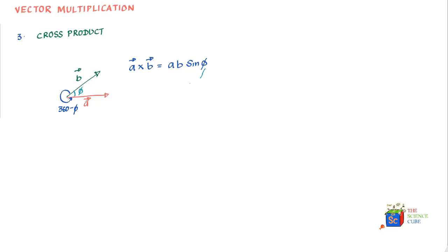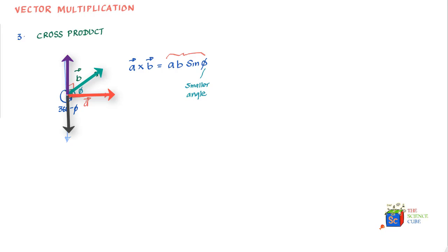When you do a cross product of two vectors, the result is a vector. What you computed is the magnitude of that resulting vector. The resulting vector is perpendicular to both vectors a and b — it could point in one direction perpendicular to both, but it could also point in the exact reverse direction, which is also perpendicular to a and b. So we need a rule to decide the direction.